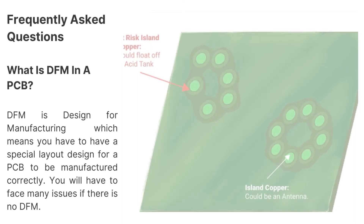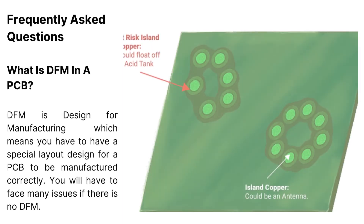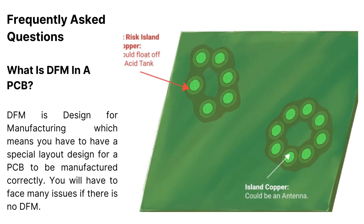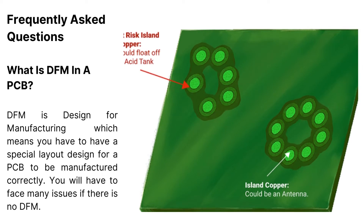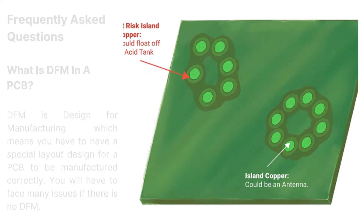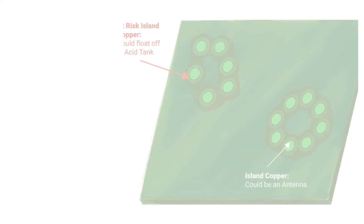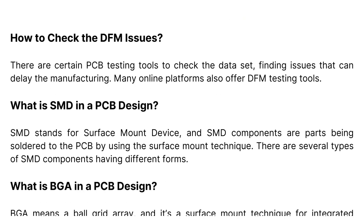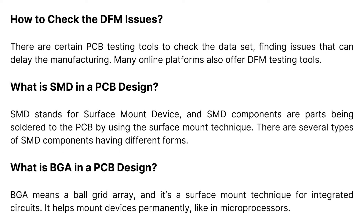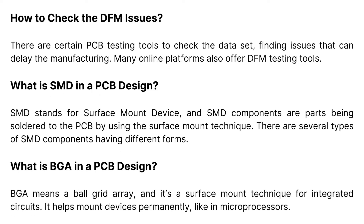Frequently asked questions — What is DFM in a PCB? DFM, or design for manufacturing, means you have to have a special layout design for a PCB to be manufactured correctly. You will face many issues if there is no DFM. How to check DFM issues? There are certain PCB testing tools to check the dataset, finding issues that can delay the manufacturing. Many online platforms also offer DFM testing tools.